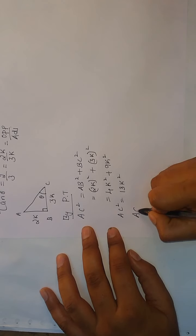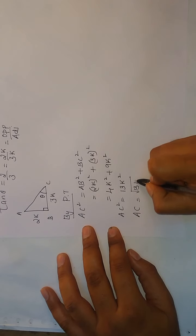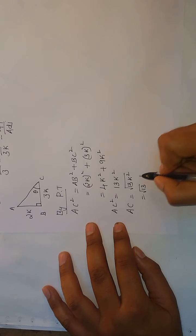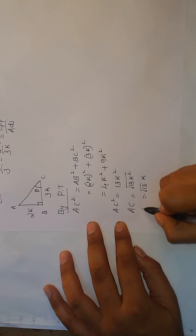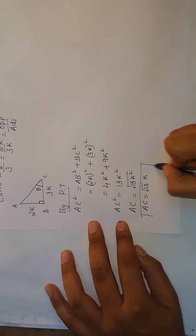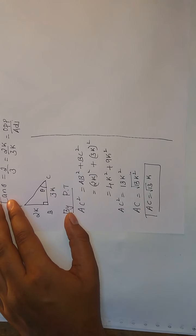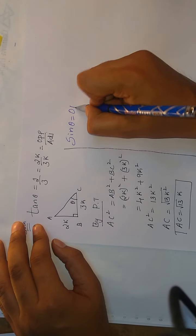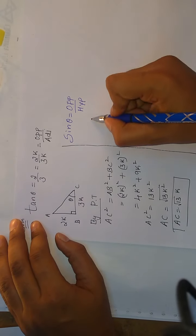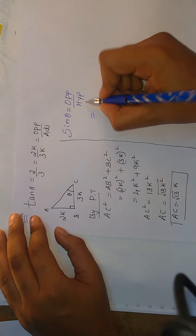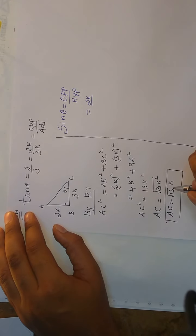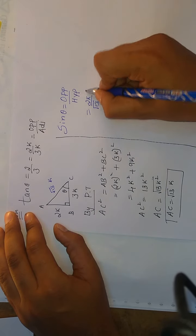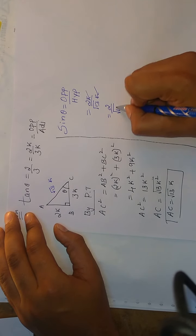This is the value of AC. Now sin θ, sin θ definition is opposite side by hypotenuse. θ opposite side AB is 2k, hypotenuse AC is √13k, so sin θ equals 2 by √13 is the answer.